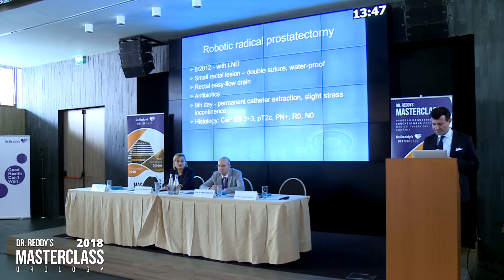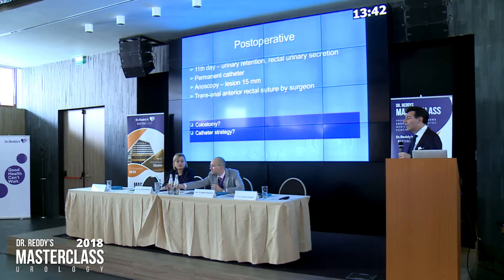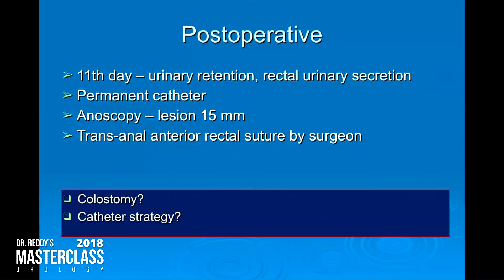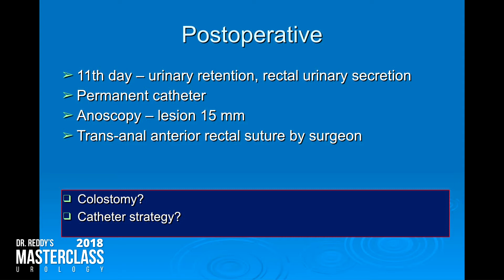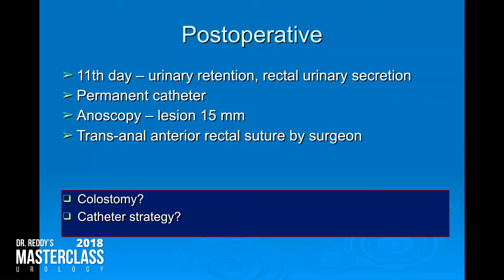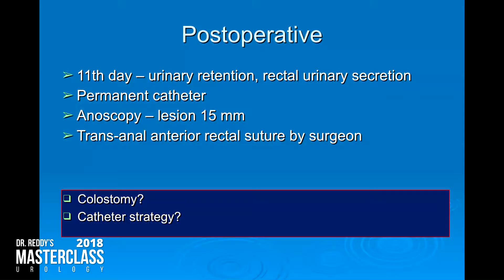The patient wasn't doing that well. He came back on day 11 and said he could not pee — he was in retention. And suddenly he also had urine coming out of his rectum. Initially we thought it was normal rectal secretion, but we put back in a catheter, did anoscopy, and saw a 15 millimeter lesion — the suture was open. We called the surgeon the same day.